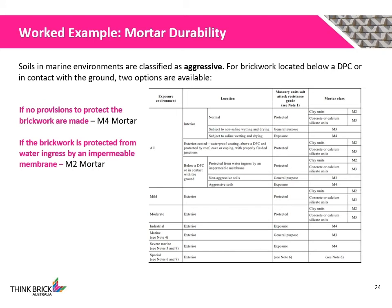Soil in marine environments is classified as aggressive. For brickwork located below a damp proof course or in contact with the ground, two options are available. If no provisions to protect the brickwork are made, M4 mortar shall be used. If the brickwork is protected from water ingress by an impermeable membrane, M2 mortar shall be used.